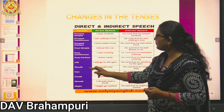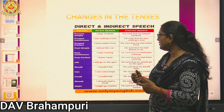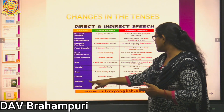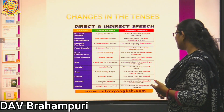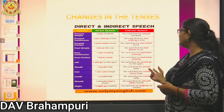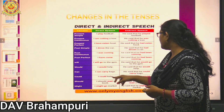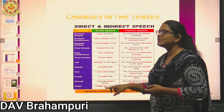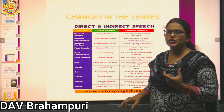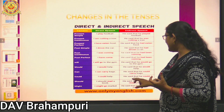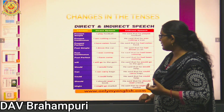Modal verb changes: will changes to would, can changes to could, shall changes to should, and may changes to might. Examples: 'I would help' → 'he said that he would help.' 'I can carry bags' → 'he said that he could carry bags.' 'I could help' → 'he said that he could help.' Since 'could' is already in past form, it remains as it is in indirect speech. Similarly, 'should' and 'might' remain unchanged.